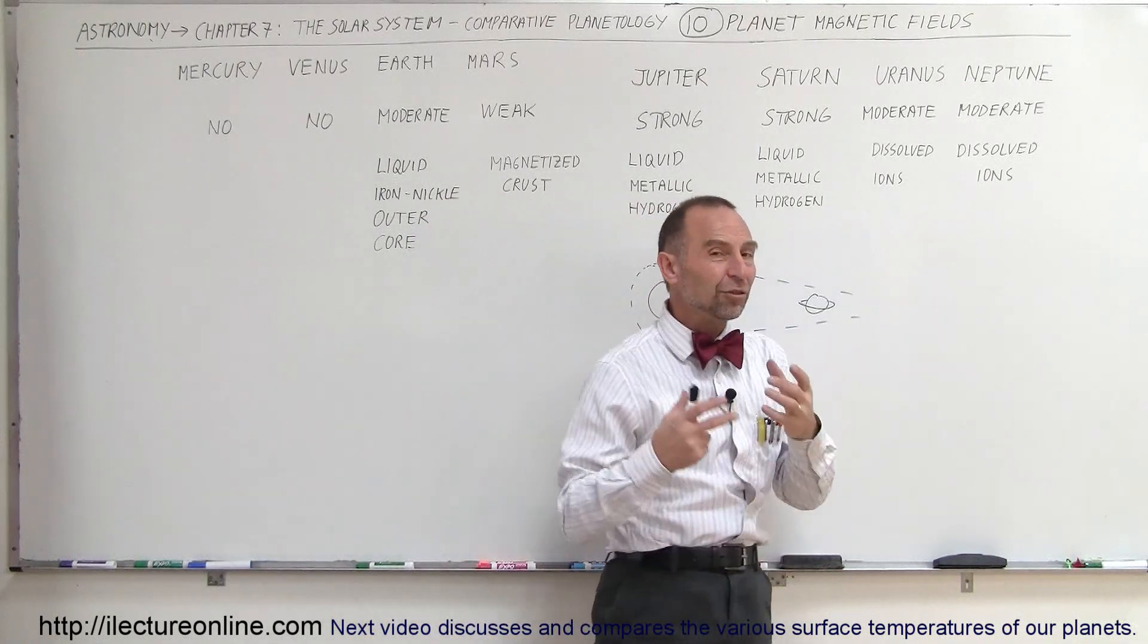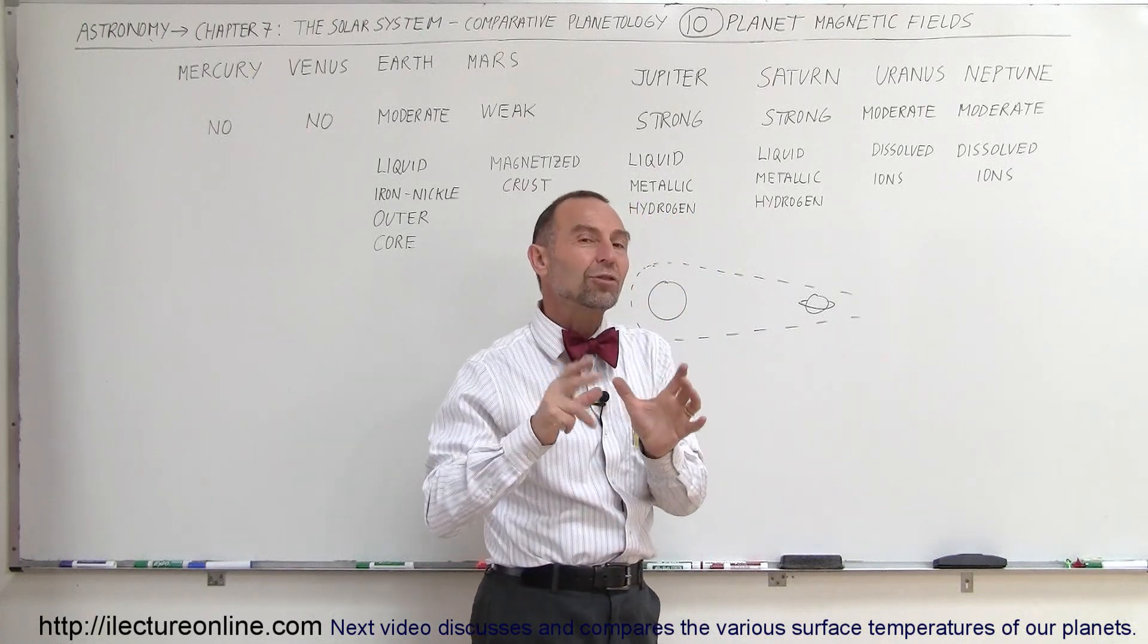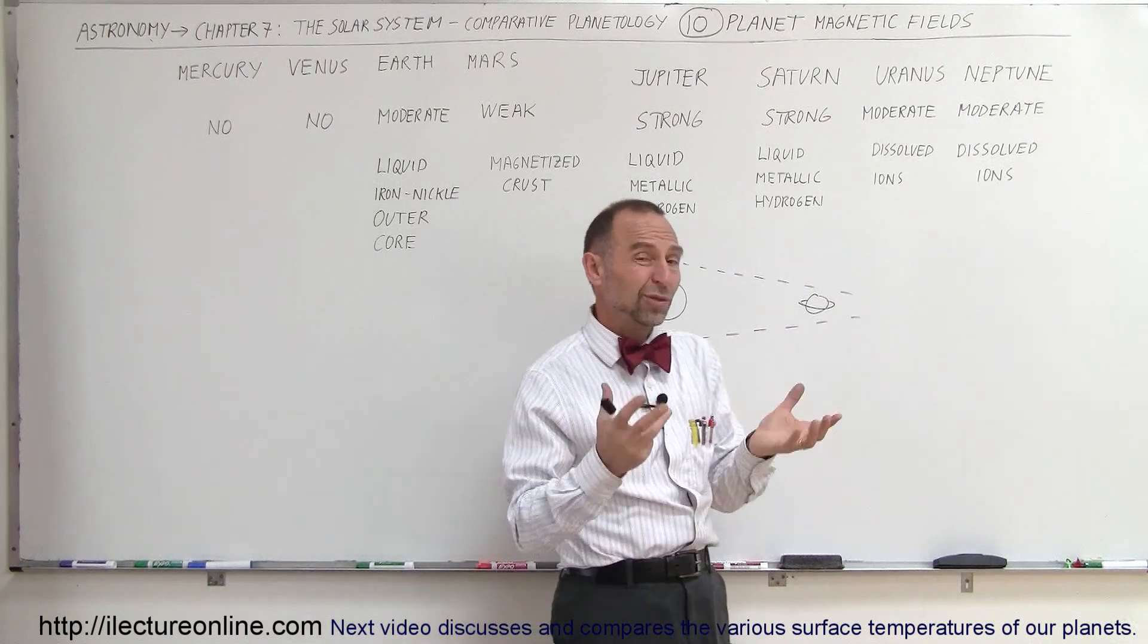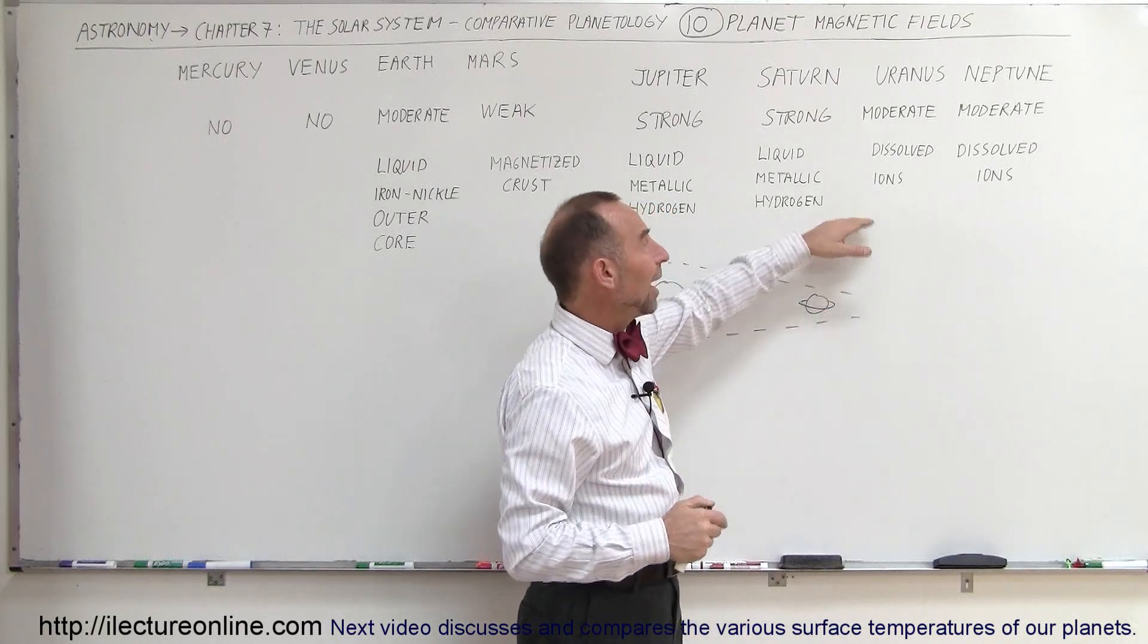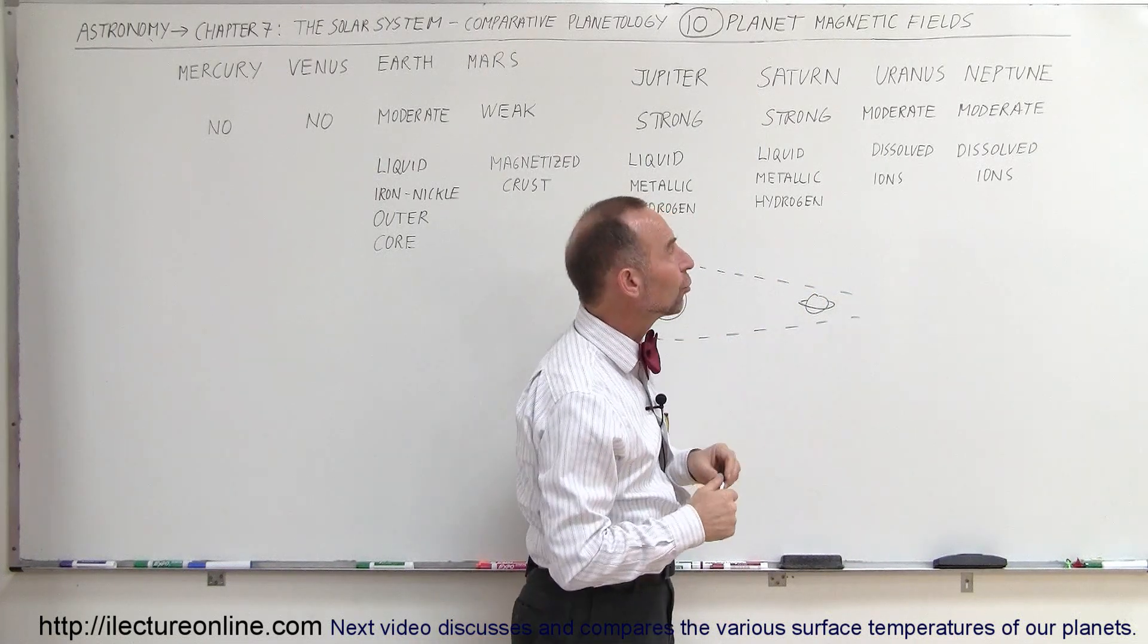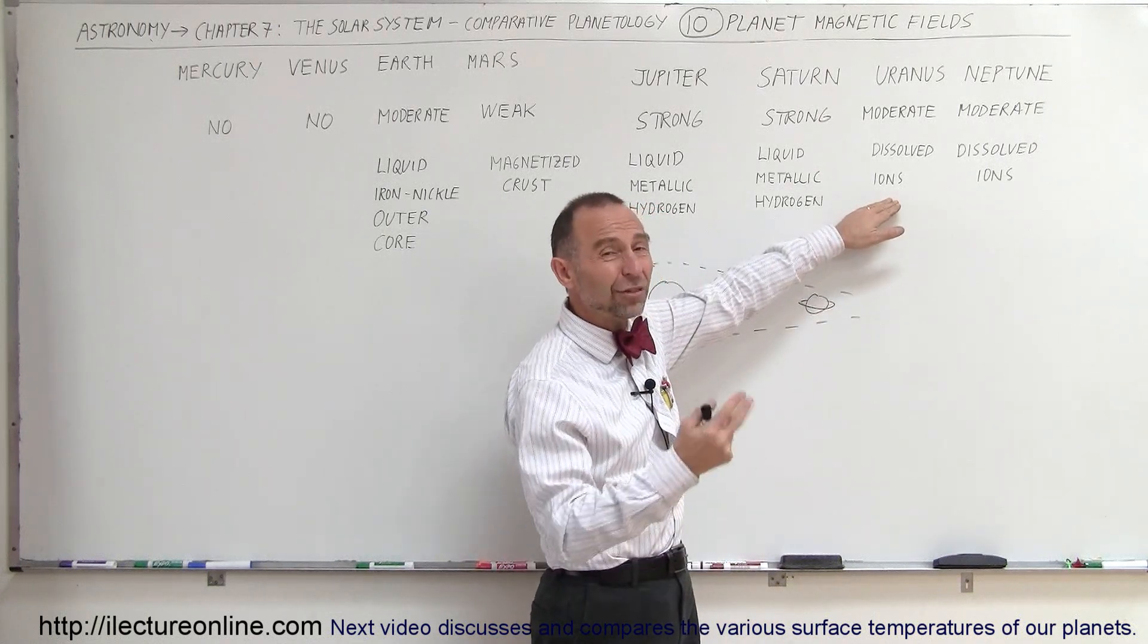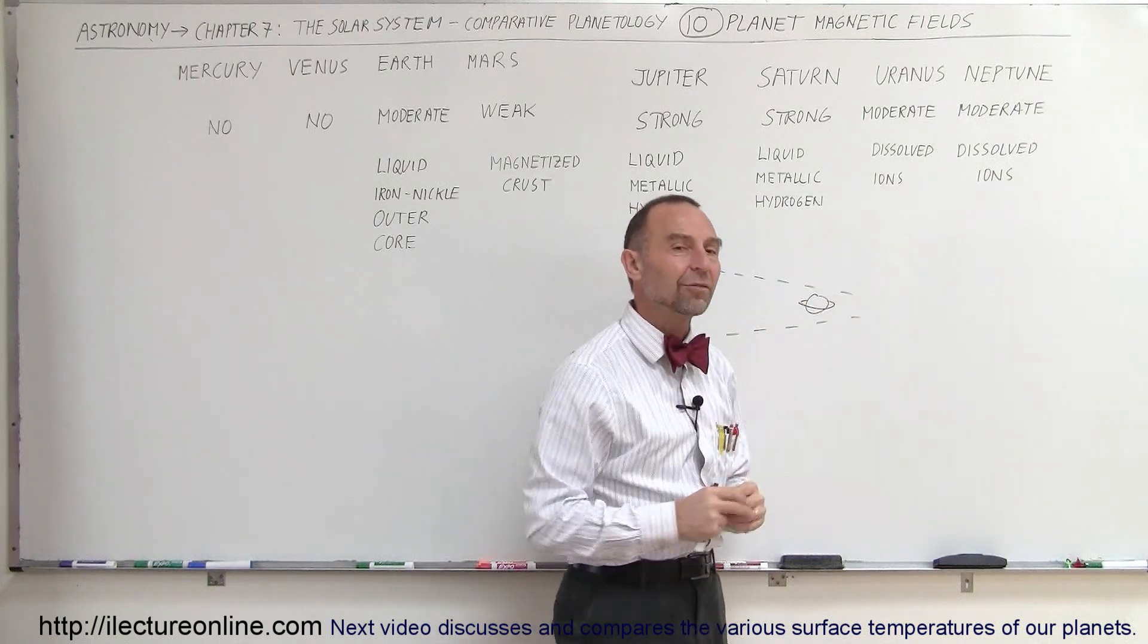Uranus and Neptune have a different type of reason why they have moderate magnetic fields. There, of course, the interior is made out of liquid water and liquid ammonia. There's probably a lot of ions within that interior as well, which are called dissolved ions, within that methane water environment, and because the rapid rotation of the planets, there's a lot of currents within the interior of those two planets as well. In that rapid rotation, the currents that contain the ions that are dissolved in the water and the methane will then cause electrical currents and therefore cause the magnetic fields to exist.